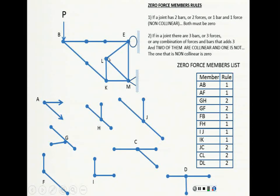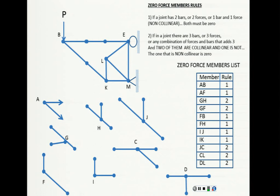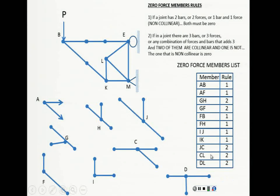Let's keep going. Here — three bars — but I don't have two of them collinear, so I can't do anything. Here — three bars again — no collinearity, so nothing applies. Here I actually have five: three bars plus two reaction forces. Nothing to do there. And at this joint, you have four — three bars plus the roller reaction — so nothing else can be done. Those are all the zero force members, with each rule applied and explained.